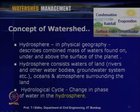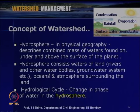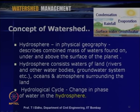We will discuss the watershed management within the perspective of mainly water, including the hydrosphere and hydrological cycle. The hydrosphere in physical geography describes the combined mass of waters found on, under, and above the surface of the planet, consisting of waters of land, rivers, and other water bodies, including the ground water system, oceans, and the atmosphere. When we discuss water resources within a watershed, we must consider surface water, ground water, and what is happening to the water resource within the watershed. We must also consider the hydrological cycle, which means a change in phase of water in the hydrosphere.